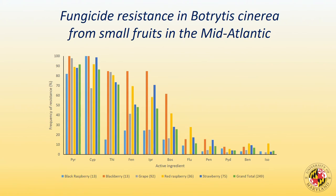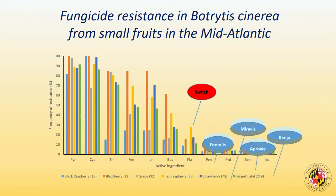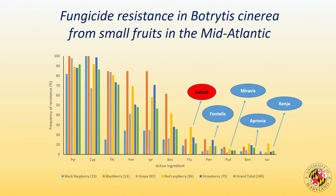We collected isolates from different small fruits — blackberry, raspberry, grape, and strawberry — and tested for resistance to different active ingredients. Resistance was identified to almost all those active ingredients tested. The better ones are Switch, Fontelis, Merivon, Aprovia, and Kenja — those still have much less resistance issues compared to the others. Switch and the newer SDHI fungicides are among the more effective options.